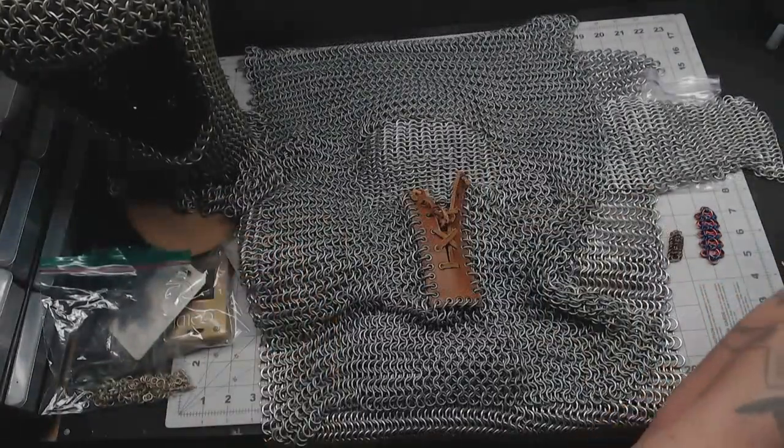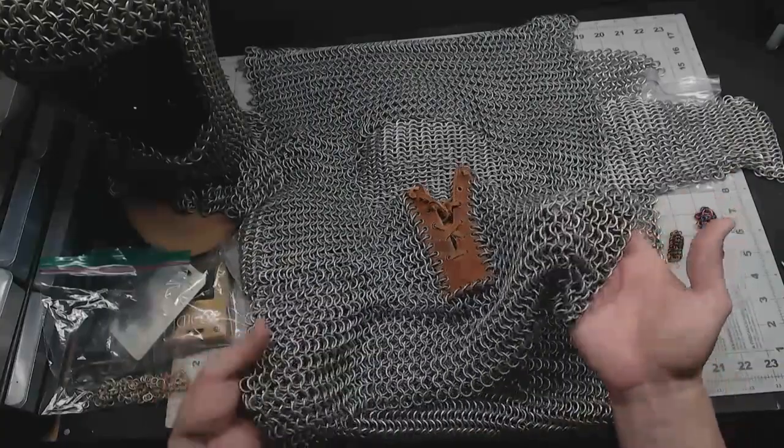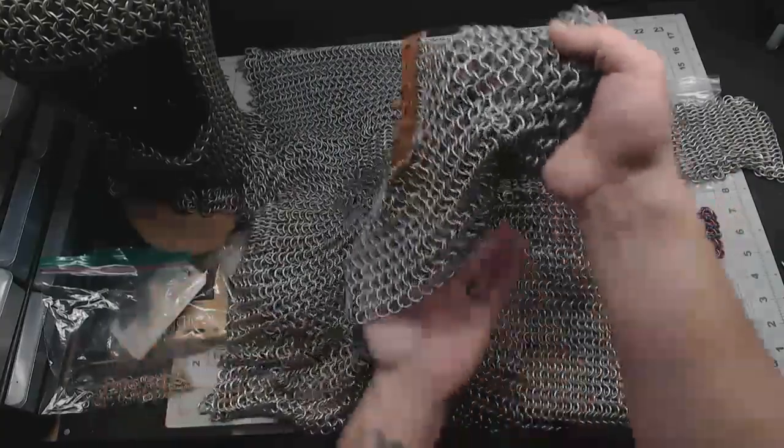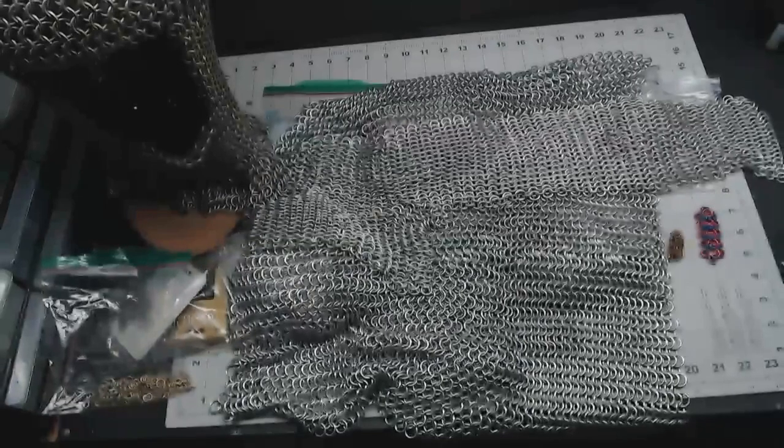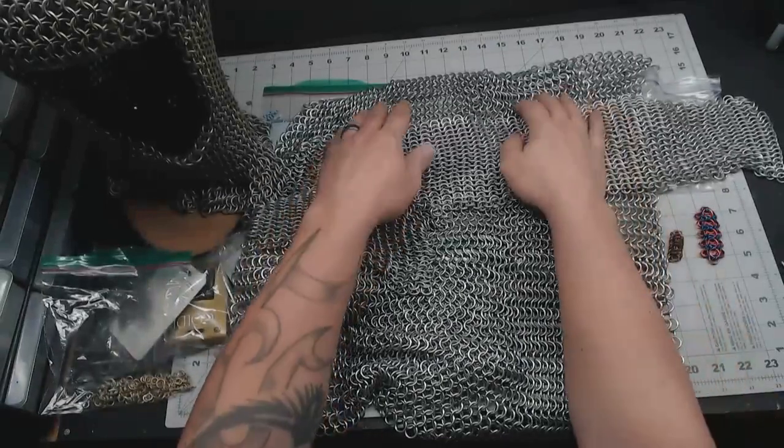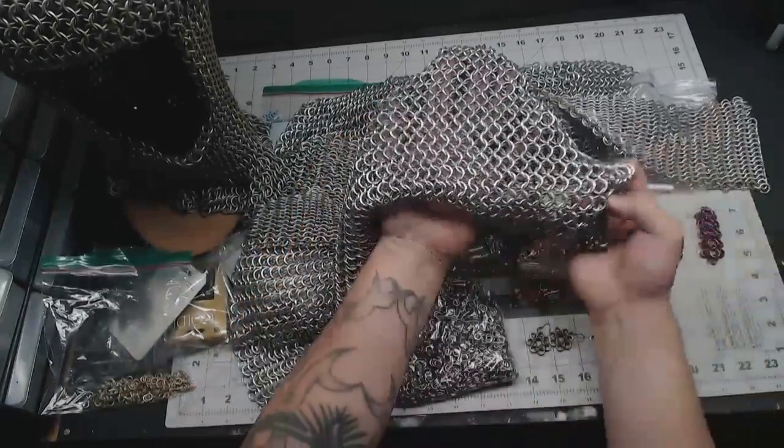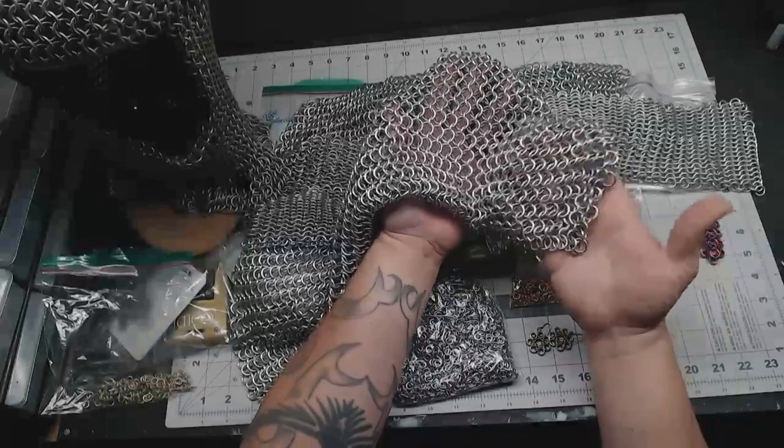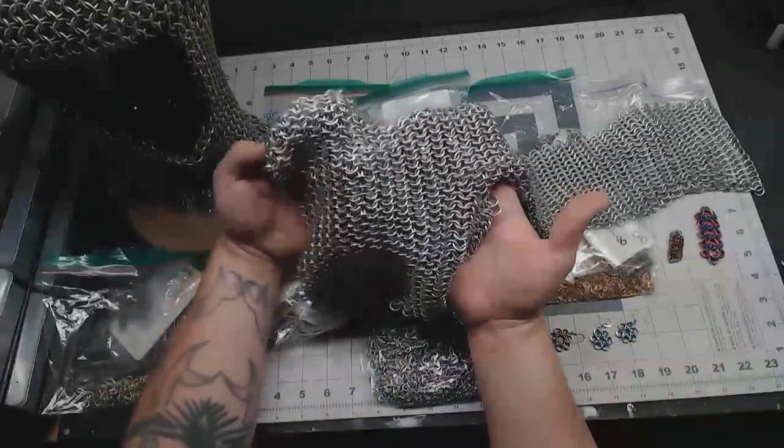The rings come in about a billion variations. You've got this stuff which is galvanized steel—it's stinky and pretty heavy. You've got this, which is the same ring size but it's aluminum so it's really light. This is also aluminum but a smaller ring size.